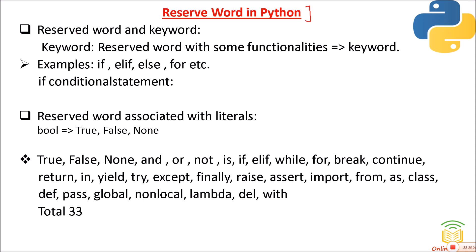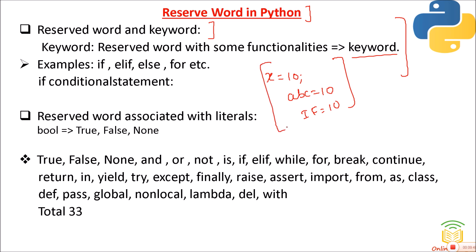Now let's look at reserved words in Python. Reserved words and keywords: a reserved word with some functionality is called a keyword. There are 33 reserved words in Python which we cannot use as a variable or identifier. For example, you can assign values to x, a, b, c, but not to the 33 reserved words.